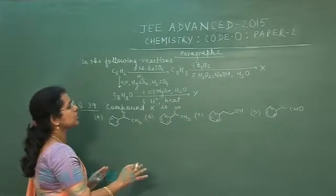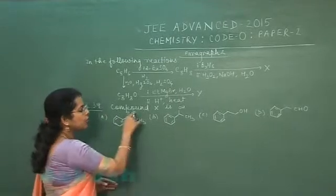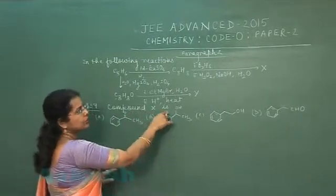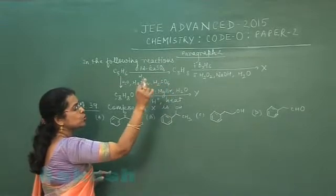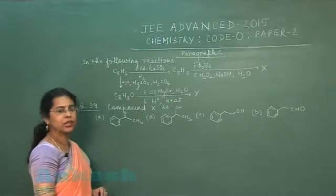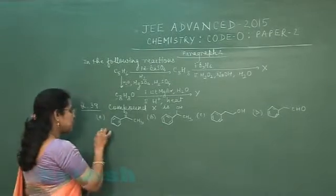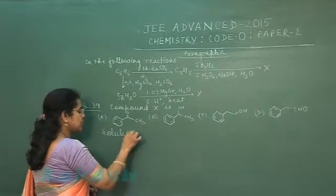So question based on this paragraph is question number 39. Compound X is - this reaction में, जो compound, जो product X बन रहा, उसका structure हमें identify करना है. Four options are given in the question. So answer को find out करने के लिए, we will write the question.